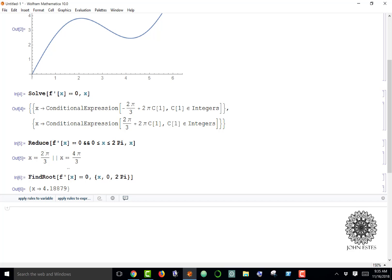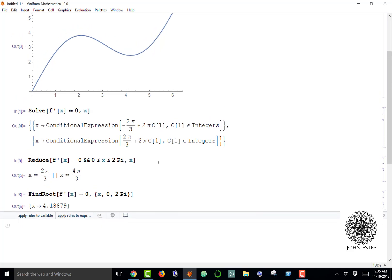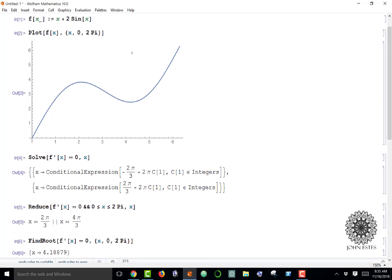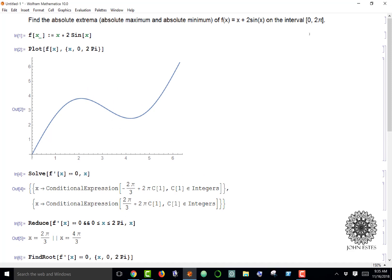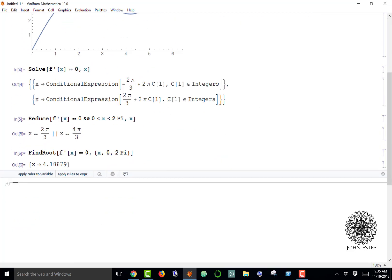In this case we're going to go with reduce. Now I have my candidate list of what's going to give me a min and max. I need to test 0 and 2 pi and my two critical points, so I'm going to make a list.